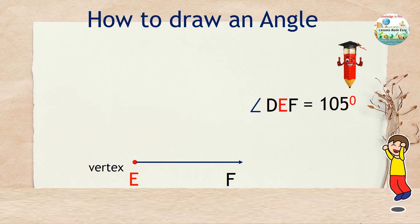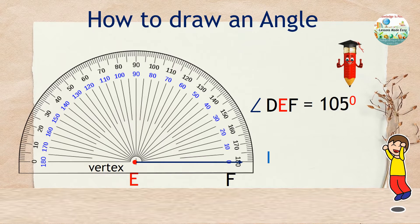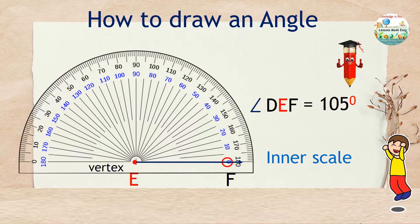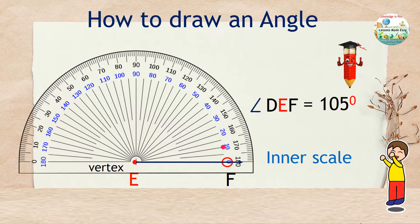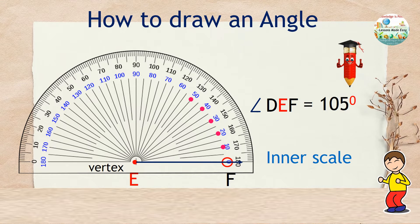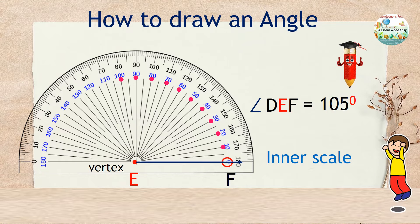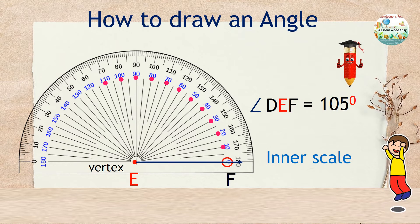Since our ray is pointing towards the right, this means we will use the inner scale in blue because this is where we can find 0. And from 0, we keep counting until we reach 105. So from 0, we have 10, 20, 30, 40, 50, 60, and so on until you get to 100 and 110.